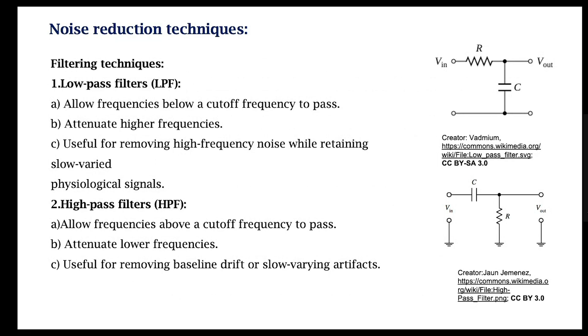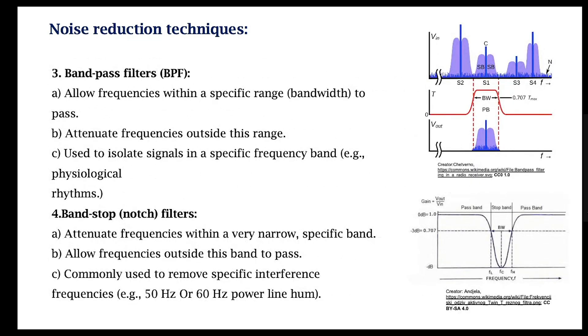Then there are band-pass filters. These allow frequencies within a particular range to pass but stop or reject values outside of this range. So this is useful to restrict signals to a particular frequency range or a band of frequencies, for example, if you are interested in a particular physiological rhythm.